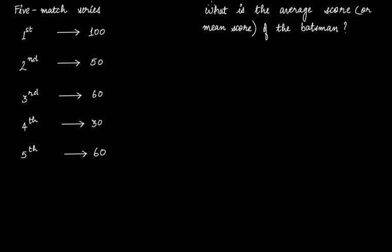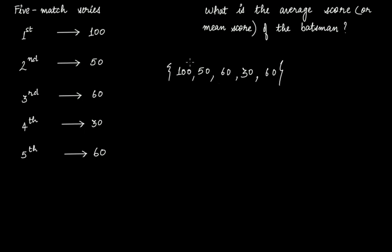Now for another example. In a five-match series, in the first match you score 100, then in the second match 50, then 60, then 30, then 60. This is represented by a data set as 100, 50, 60, 30, and 60. This data set tells you the scores in each of the five matches.